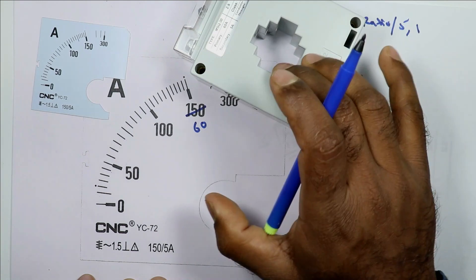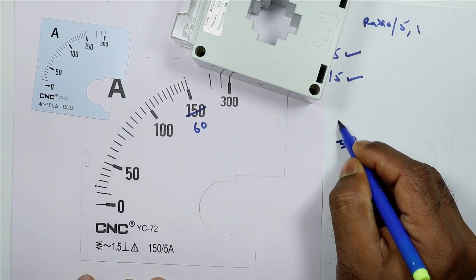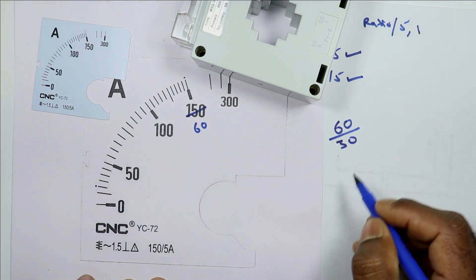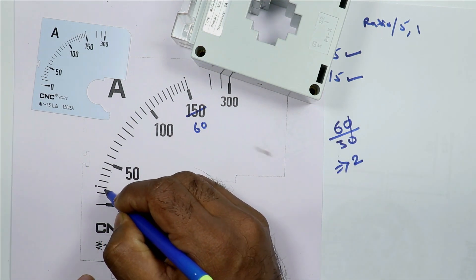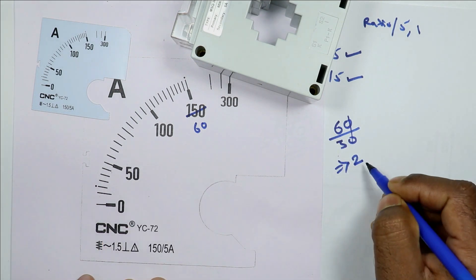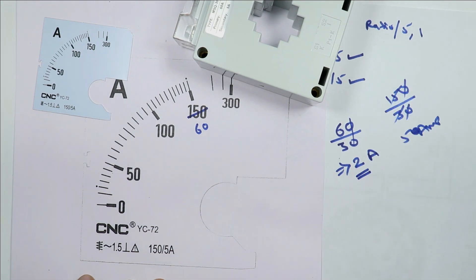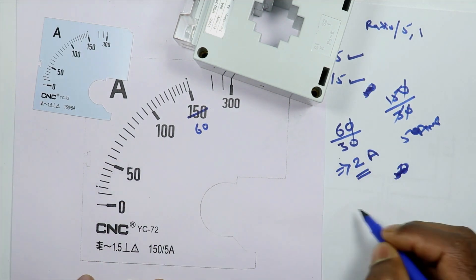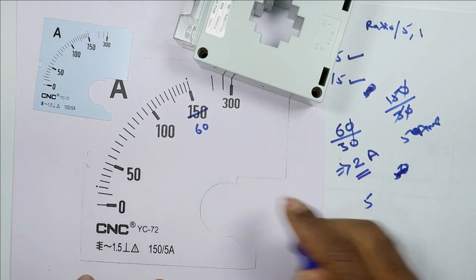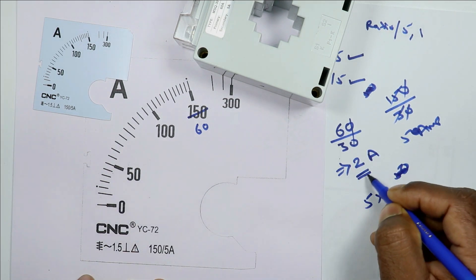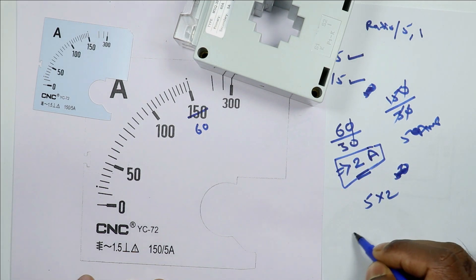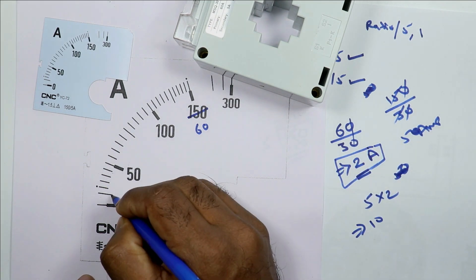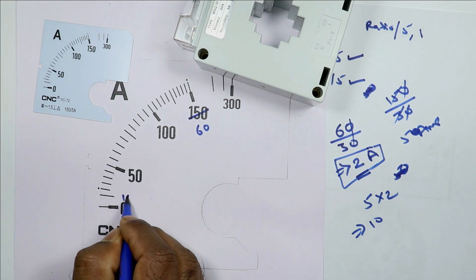The ratio of this CT is 60 by 5. I will write 60 divided by 30. On dividing the result will be 2. This means the difference between every two consecutive lines is 2 ampere. We have to do scaling as per 2 ampere. This medium line is used for counting of 5. I will multiply this by 2. I am multiplying this by 2 because one scaling is 2 ampere. So 5 into 2, 10. This line will become 10 ampere.